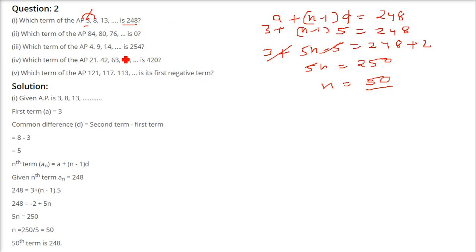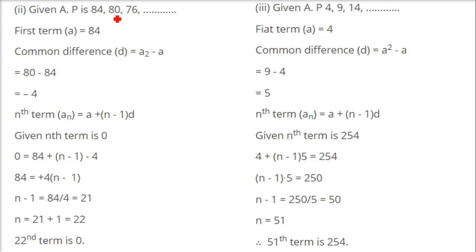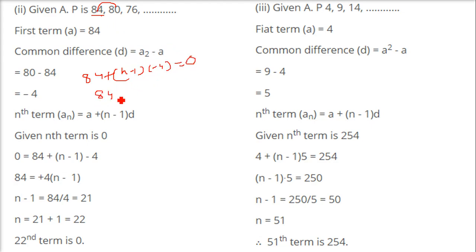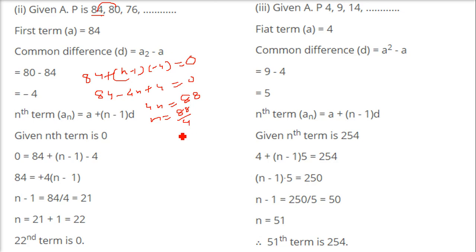I'll take one more example. For the AP 84, 80, 76..., A is 84 and D is 80 minus 84, that is minus 4. We need to find which term equals 0. Setting the nth term equal to 0: 84 plus N minus 1 into minus 4 equals 0. Expanding: 84 minus 4N plus 4 equals 0, so 4N equals 88, giving N equals 22. So the 22nd term is 0.